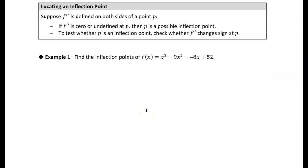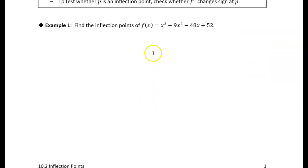Let's look at this first example — it's the same function we did in section 10.1. We're going to find the inflection points of this function, so we need to find the second derivative, which means we have to find the first derivative first. Since it's just a polynomial, we can use the power rule. We get 3x² minus 18x minus 48 as the first derivative.